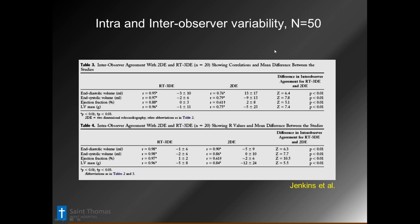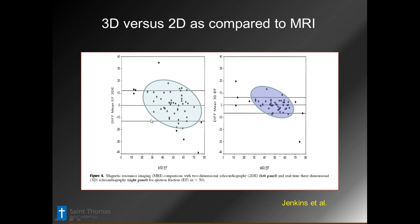Jenkins et al. looked at inter-observer variability, and there's a fair amount of variability between 2D and 3D. Because of planar alignment, 3D overcomes that. Looking at an MRI comparative using 3D versus 2D, the 2D Bland-Altman plot has a much wider width of agreement, where 3D is very tight — out of 50 patients, so it's very obvious.